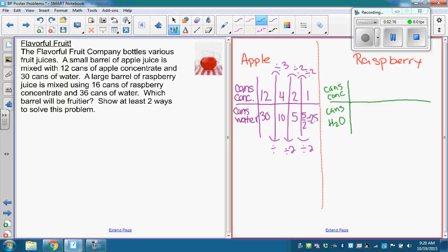Ella, so if you find unit rate, you just have to get it down to one? It just has to have a one in it. One. Okay. So 16 cans of raspberry concentrate to what? 36. 36, right?